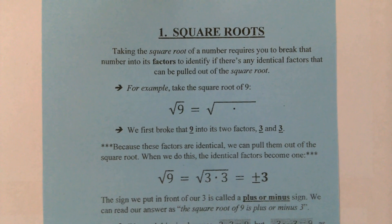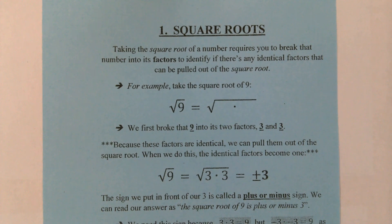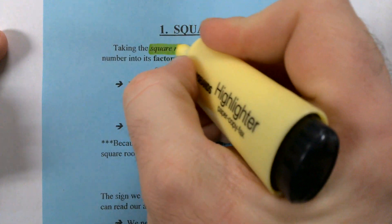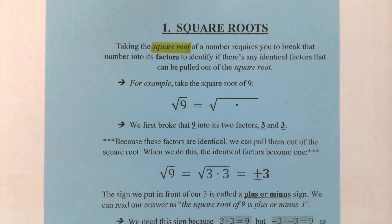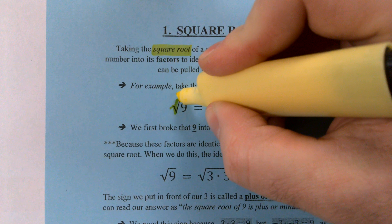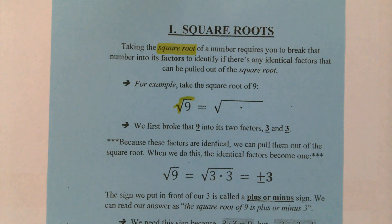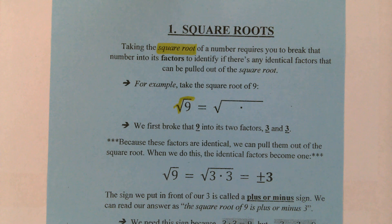We've got a couple of keywords in here that I want to highlight. First, of course, being the square root — that is this symbol right here. That is the square root symbol. It looks kind of like a division sign, but with a check mark out in front.